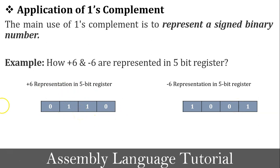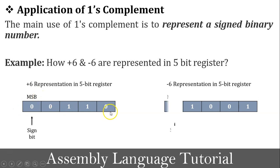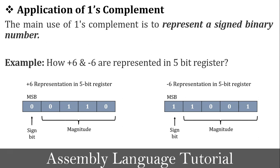The 4 bits already occupy part of the 5-bit register. The remaining bit is the most significant bit, which is 0. The most significant bit indicates the sign bit. In the binary number system, 0 represents the plus sign and 1 represents the minus sign — the most significant bit is called the sign bit, and the remaining bits are called the magnitude. So -6 is exactly the one's complement of +6.